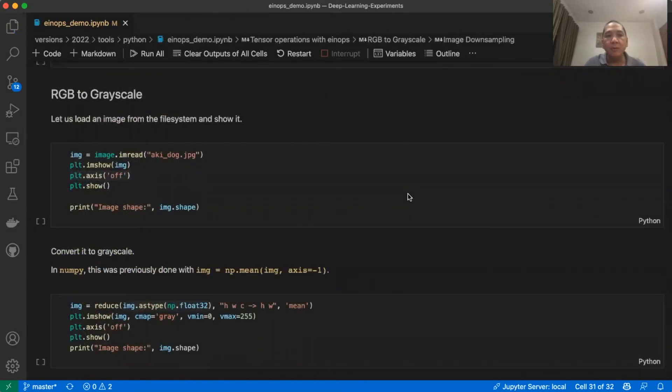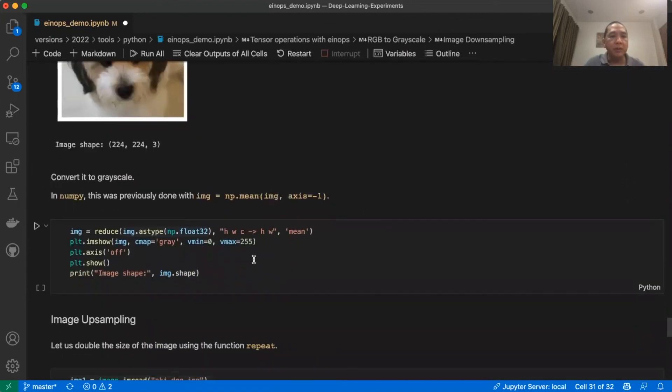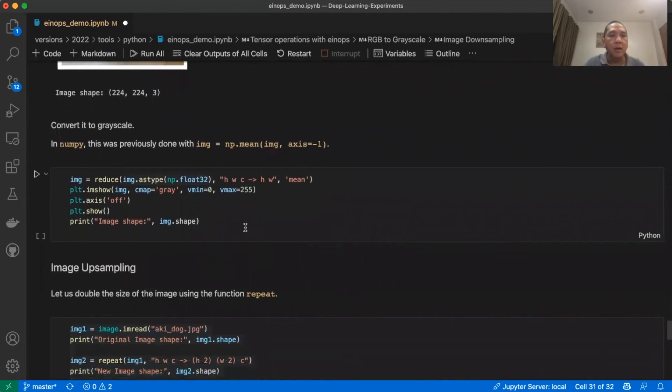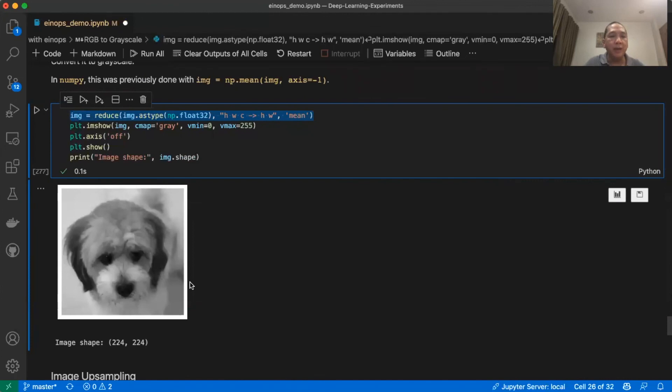The next examples are much simpler. The first one is RGB to grayscale. Let us load an image first from the file system and show it. We have done this before. Then we convert it to grayscale using EinOps reduce. Actually, we have done the same thing before with mean in NumPy.